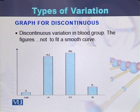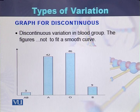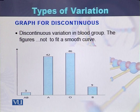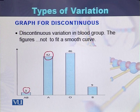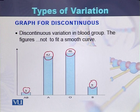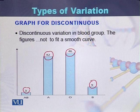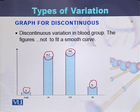The graph for discontinuous variation cannot show a smooth curve because this kind of variation is purely controlled by genes. For example, in a particular population: blood group AB is 3%, blood group A is 42%, blood group O is 46%, and blood group B is 9%. A smooth curve cannot be fitted to discontinuous variation because these variations are purely controlled by genetic makeup.